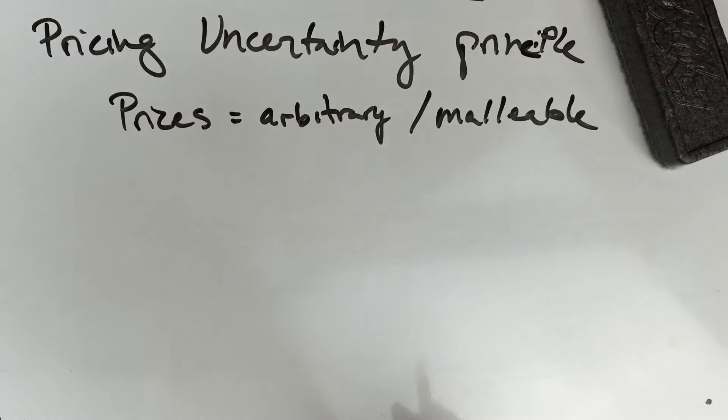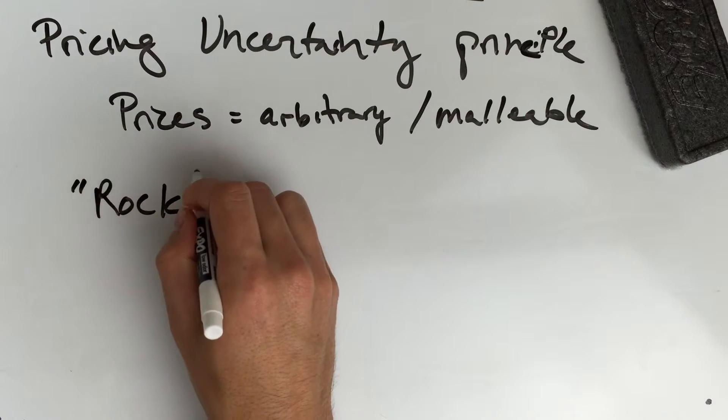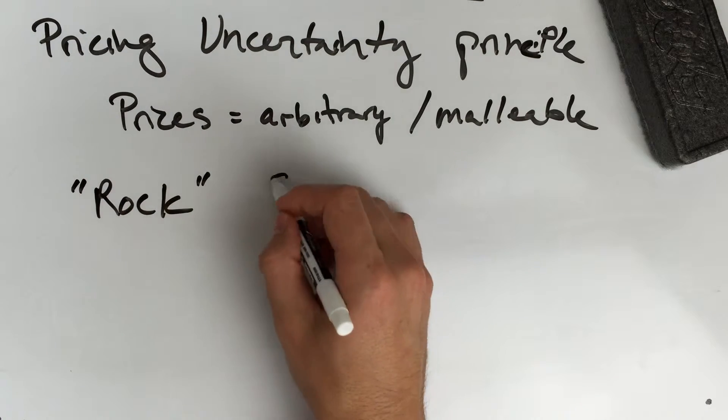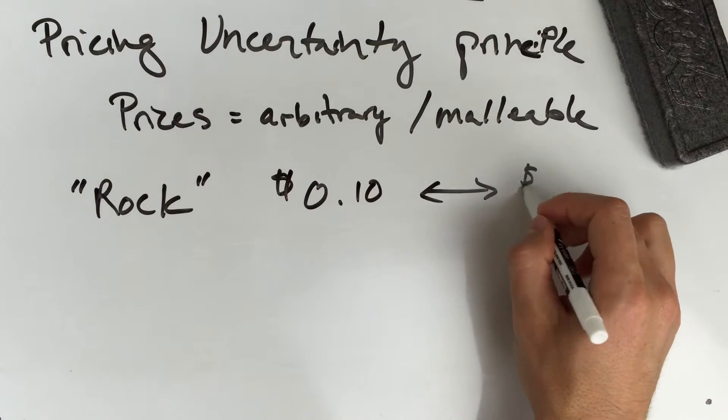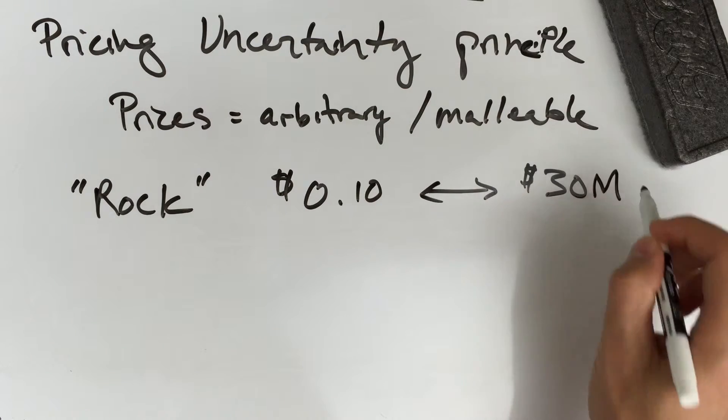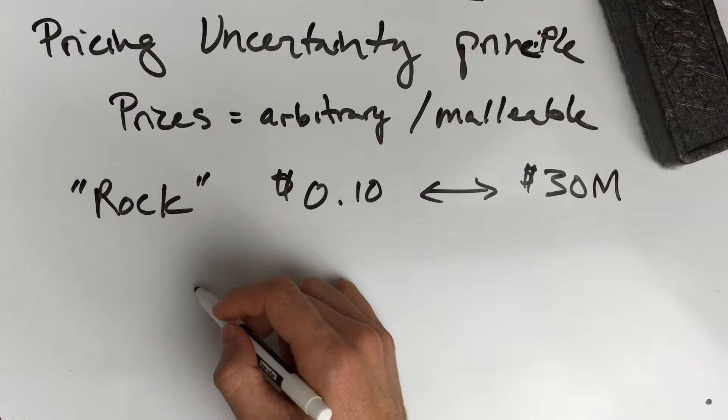The example in the book is about a rock. You can price a rock at 10 cents, you can price it at 30 million dollars—it really is completely up to you. But obviously you need to justify your pricing.